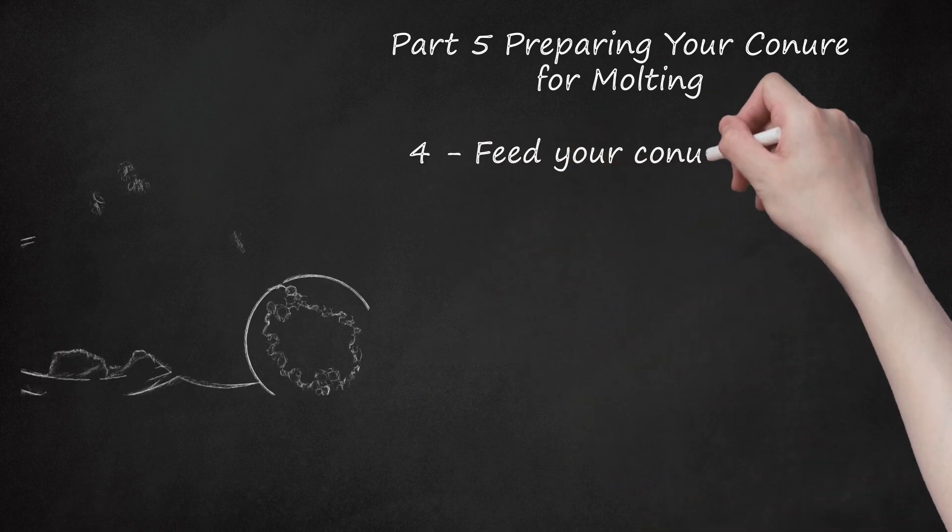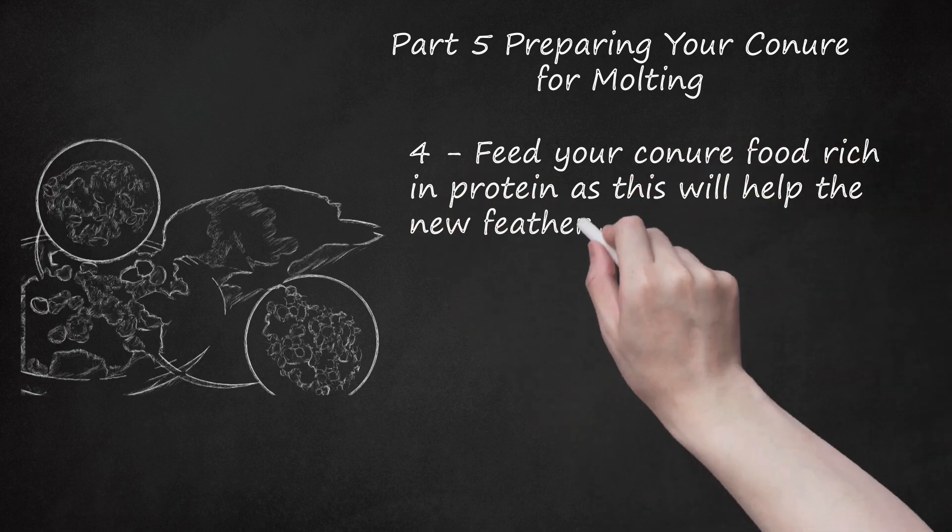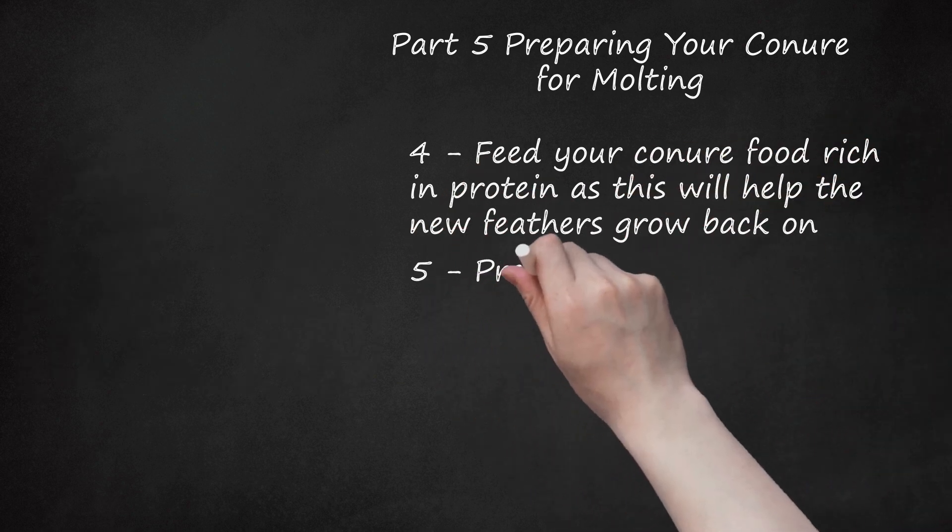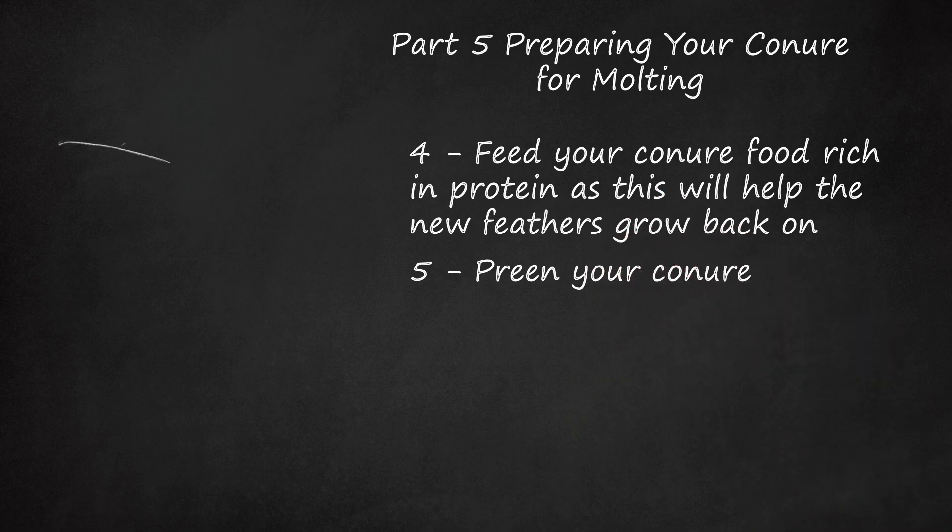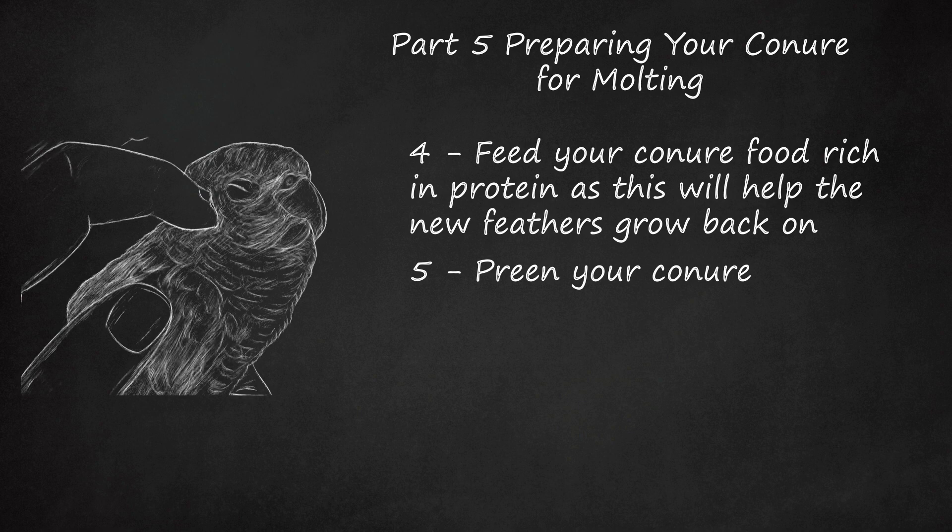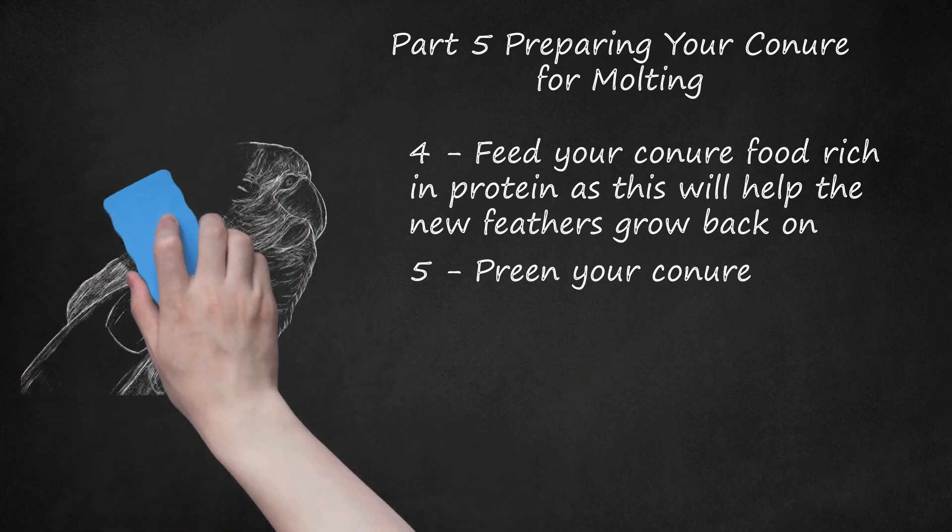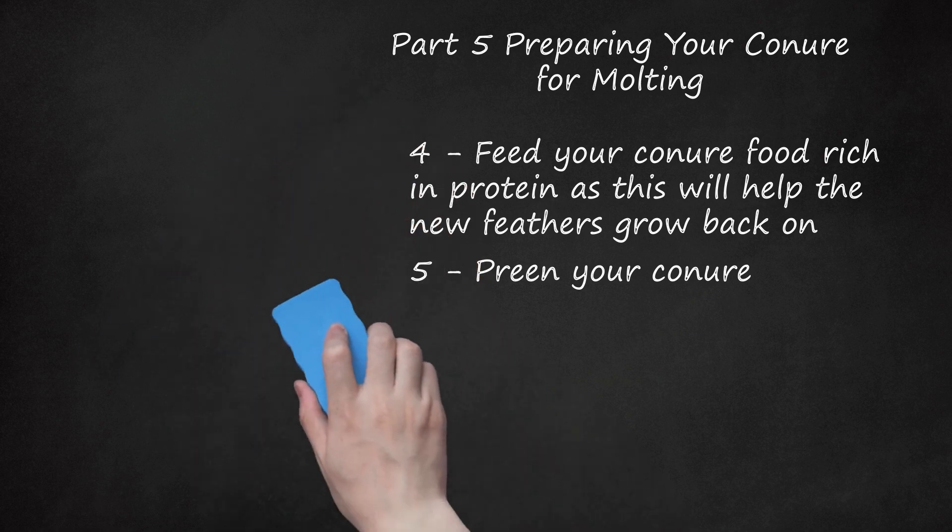Feed your conure food rich in protein as this will help the new feathers grow back on. Preen your conure. This could be done by gently brushing your hand on the conure's body to help the new feathers to come out. If you have a couple of conures who are molting at the same time, the conures can support each other by preening each other and rubbing their bodies against each other. Preen gently as new feathers could be painful to the conure when touched.